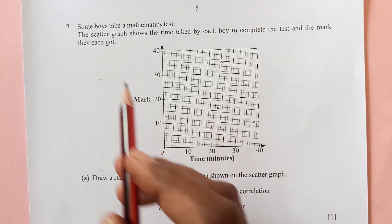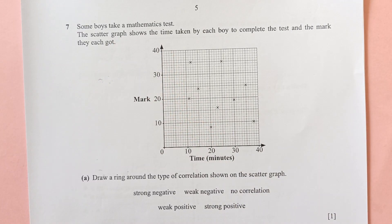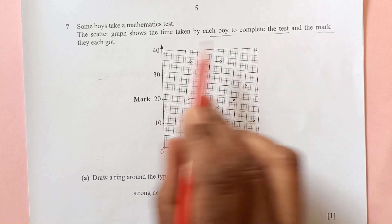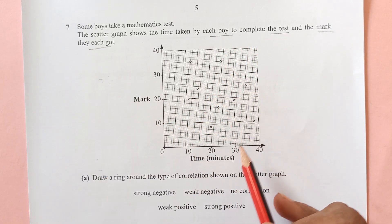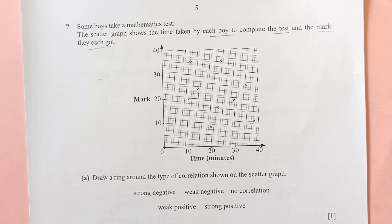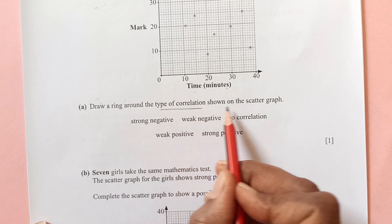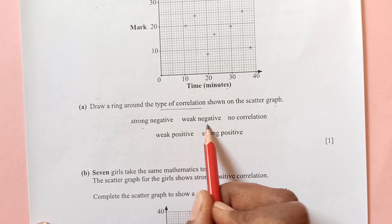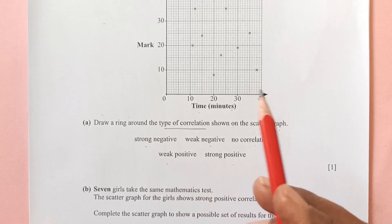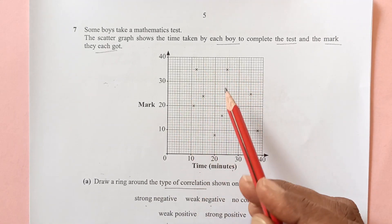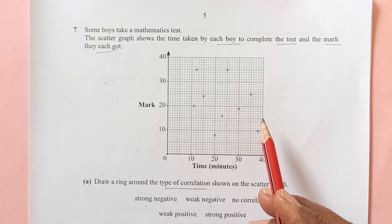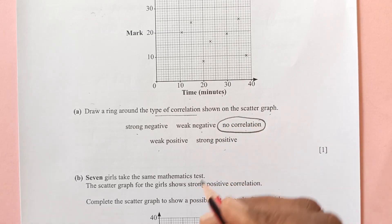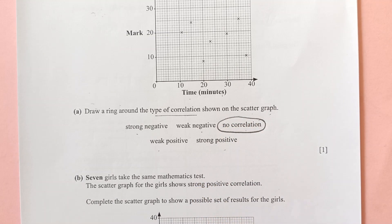Question 7. Some boys take a mathematics test. The scatter graph shows the time taken by each boy to complete the test and the mark they each got. Draw a ring around the type of correlation shown in the scatter graph. Strong negative, weak negative, no correlation, weak positive, strong positive. If you observe here carefully, all the points are scattered here and there, so there is no correlation. We cannot say it is positive or negative, so we have only here that is no correlation.